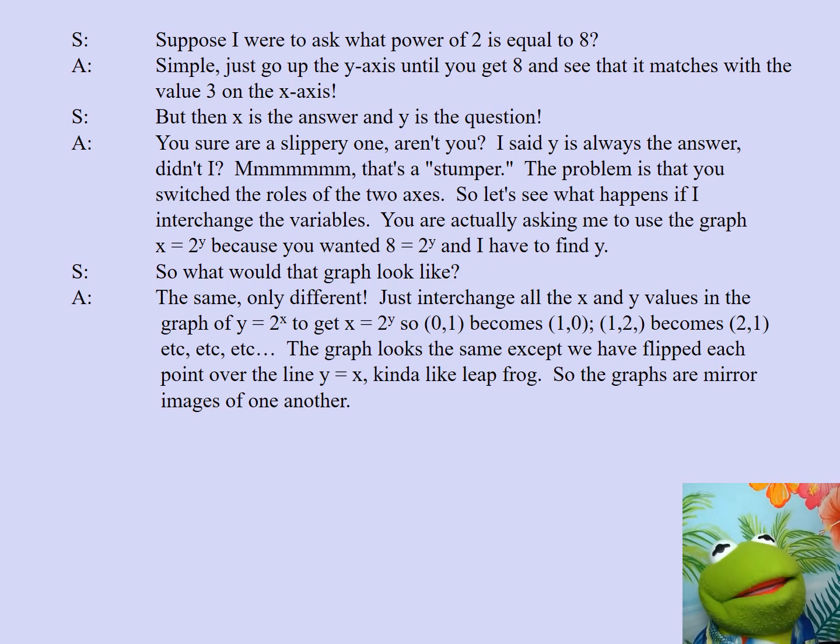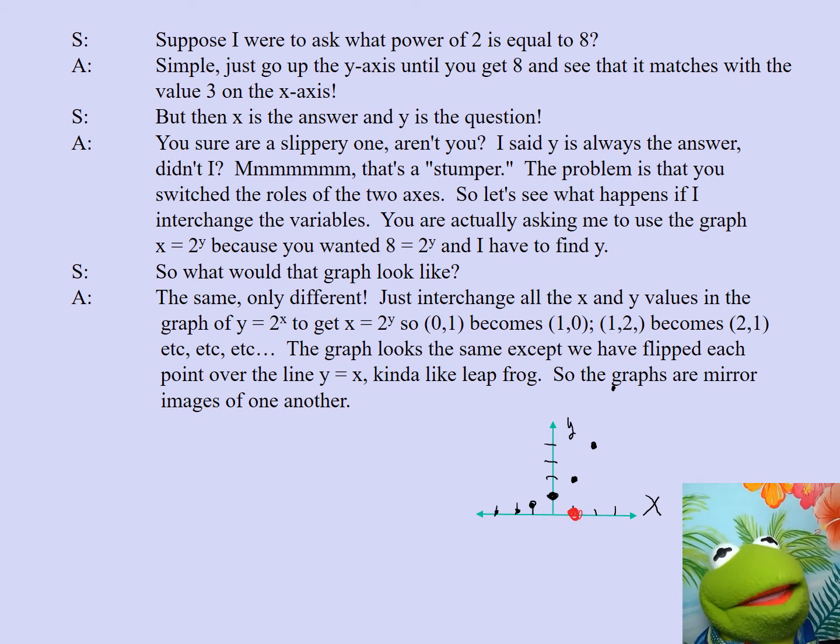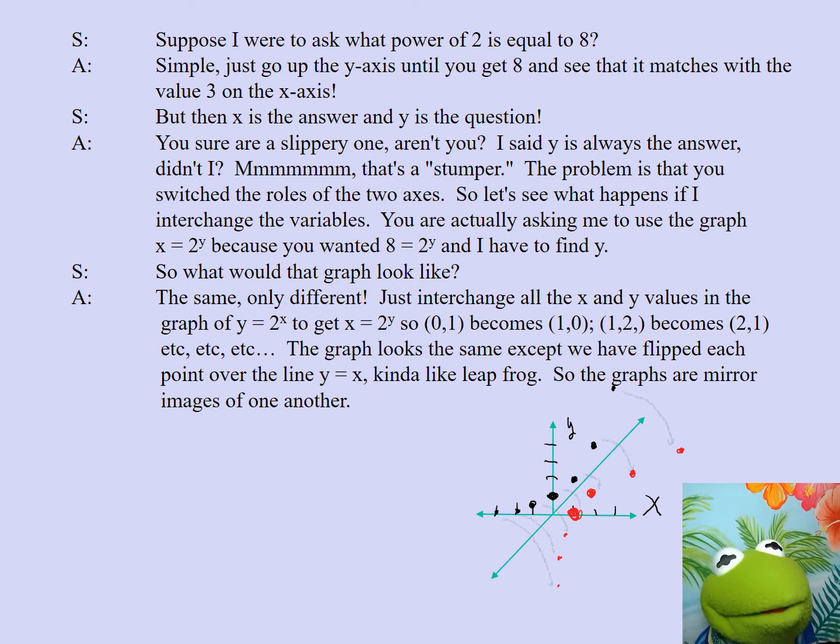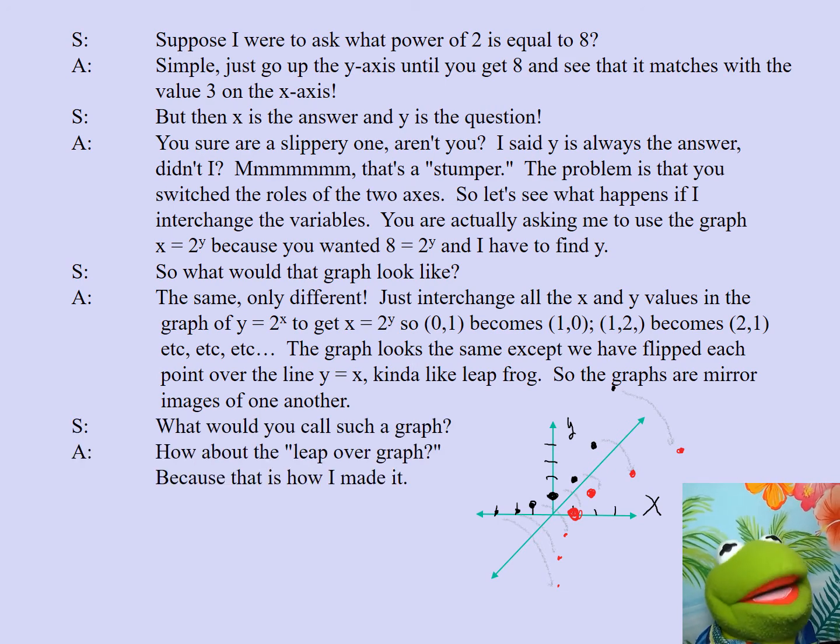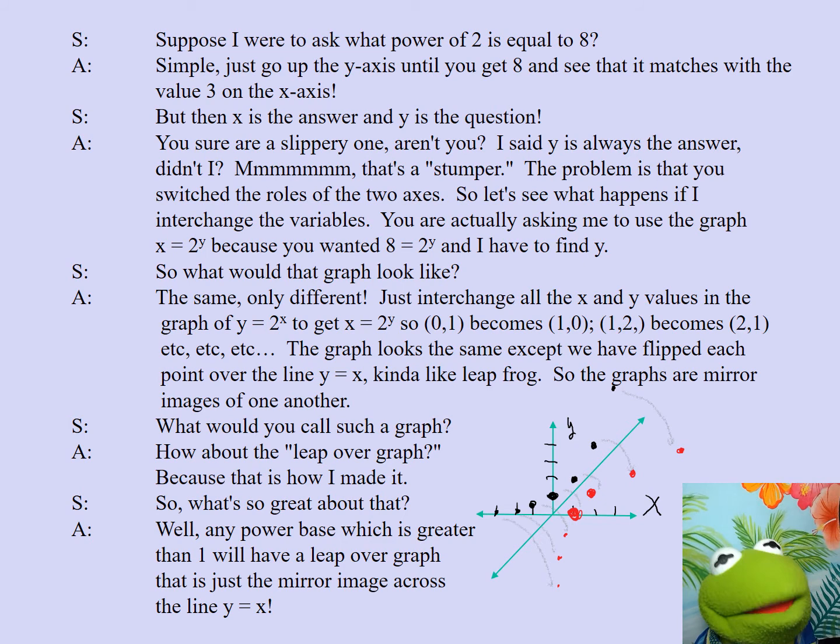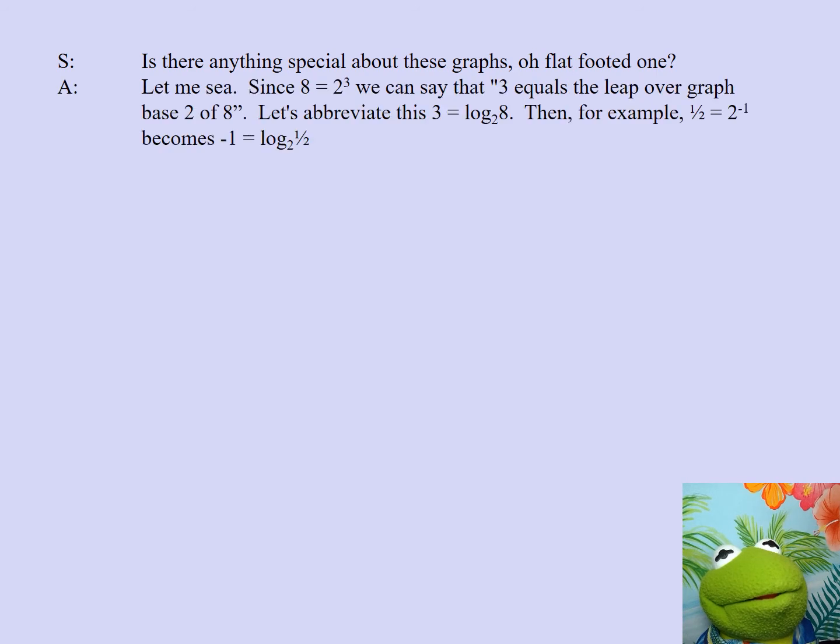You are actually asking me to find the graph x equals 2 to the y, because you wanted 8 equals 2 to the y, and I have to find y. So, what would the graph look like? The same, only different! Just interchange all the x and y values in the graph of y equals 2 to the x to get x equals 2 to the y. So, 0, 1 becomes 1, 0. 1, 2 becomes 2, 1. Etc. Etc. The graph looks the same, except we have flipped each point over the line y equals x. Kind of like leapfrog. So, the graphs are mirror images of one another. What would you call such a graph? How about the leap over graph? Because that is how I made it. So, what's so great about that? Well, any power base which is greater than 1 will have a leap over graph that is just a mirror image across the line y equals x. Is there anything special about these graphs, oh flat-footed one?